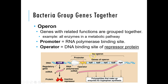The promoter is where RNA polymerase binds — this is important, and we have promoters in eukaryotes as well. The operator is where a repressor protein binds. Repressor proteins always turn protein synthesis off. So if the repressor is bound, you don't get any gene expression.